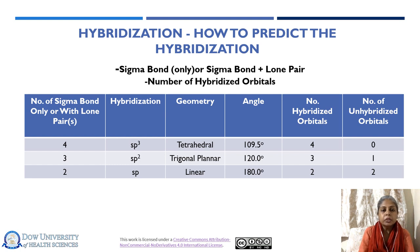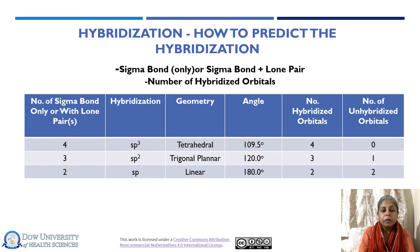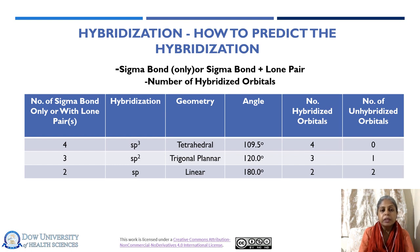How do you predict the hybridization of a particular molecule from its Lewis structure? When looking at an atom to define its hybridization, first determine whether that atom has a lone pair or not. If it does not have a lone pair, you just count the sigma bonds. If it does bear a lone pair, you count both the sigma bonds and the lone pairs. Pi bonds are not counted when predicting hybridization of a particular atom.